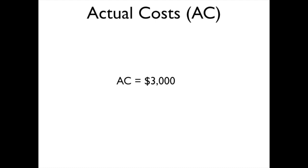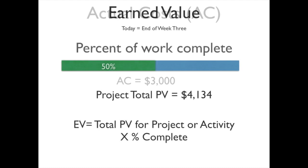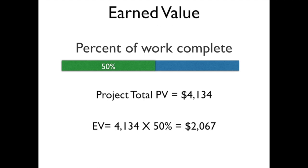I'm going to use one of the earning rules to work with my estimators or project team to figure out the percent of work that has been completed. We determine that 50% of the work is complete at this time. So I take the total planned value for my project — also known as the BAC — of $4,134, and multiply that by 50%. This gives me an earned value of $2,067.